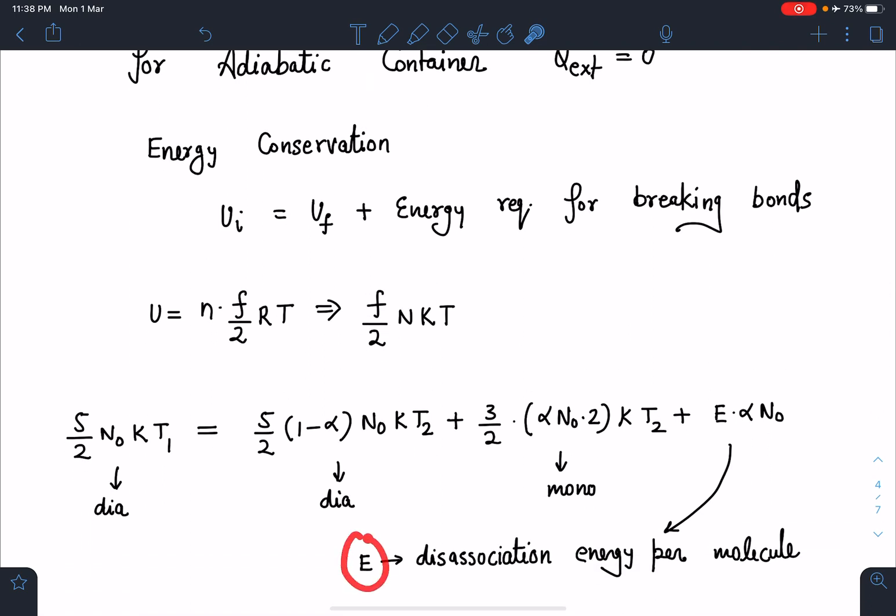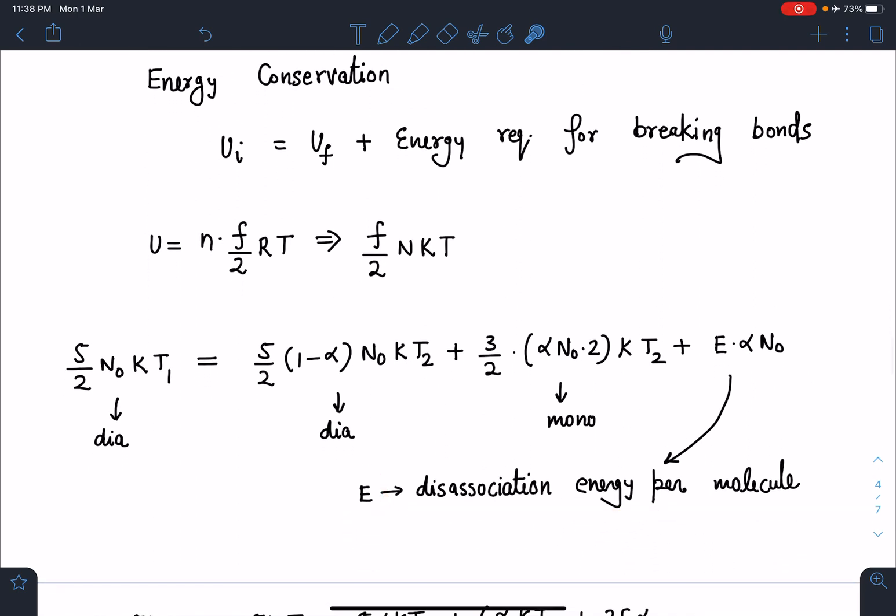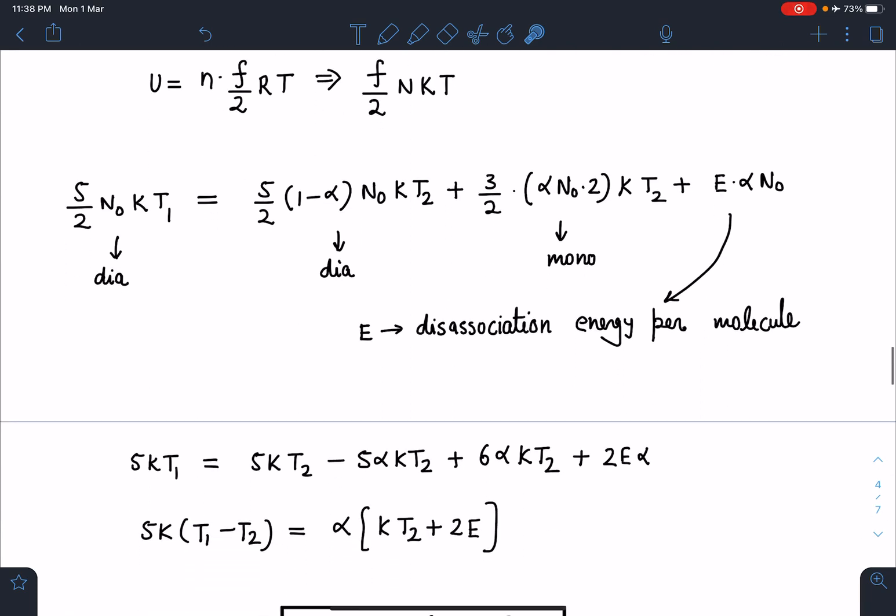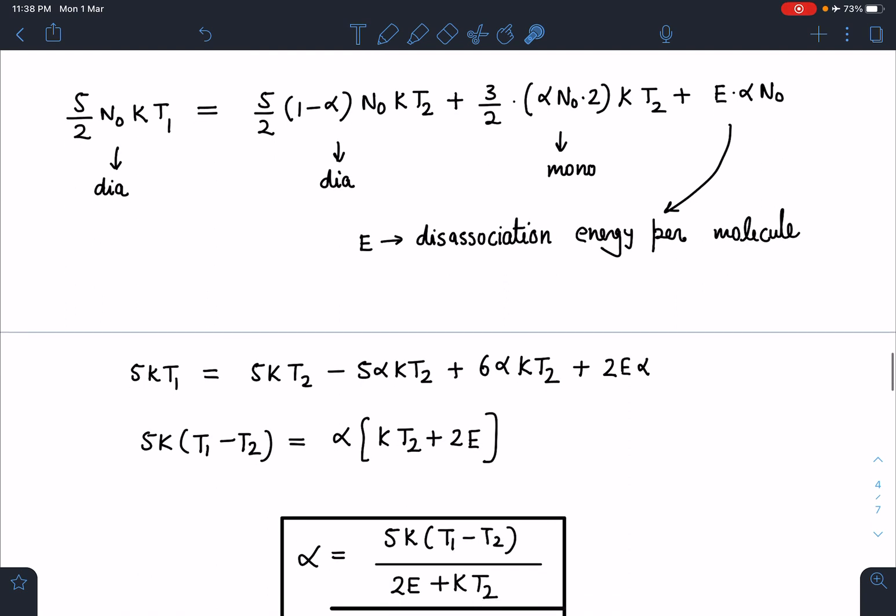In the question it is given E is the dissociation energy per molecule - that's how we have written here. If the data is given per moles we will make those changes throughout the problem. Now you can see when I simplify this - I'm not explaining this calculation at all, I think you can do that - just multiply the entire equation with 2 and remove this N₀ part, it is getting cancelled. When you rearrange these terms you will be getting α = 5k(T₁-T₂)/(2E+kT₂).